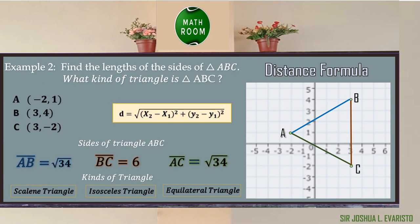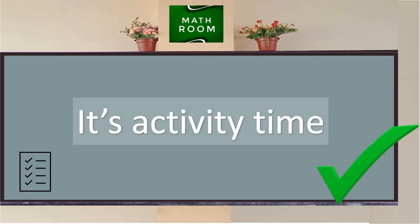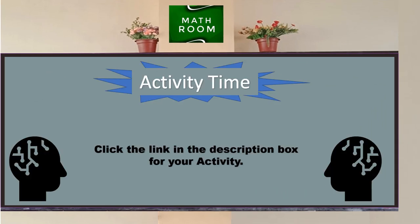Since we are done solving the lengths of the sides of triangle ABC — segment AB equals the square root of 34, segment BC equals 6, and segment AC equals the square root of 34 — we can identify this as an isosceles triangle, since two sides, AB and AC, are equal.